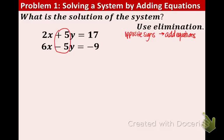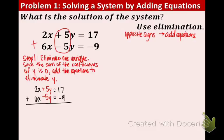When we add these equations, we look at the numbers in front. 2x plus 6x equals 8x. 5y plus negative 5y is 0, so they cancel out. And 17 plus negative 9 — that is 17 minus 9 — equals 8. So we have a one-step equation: divide both sides by 8, and you get x equals 1.